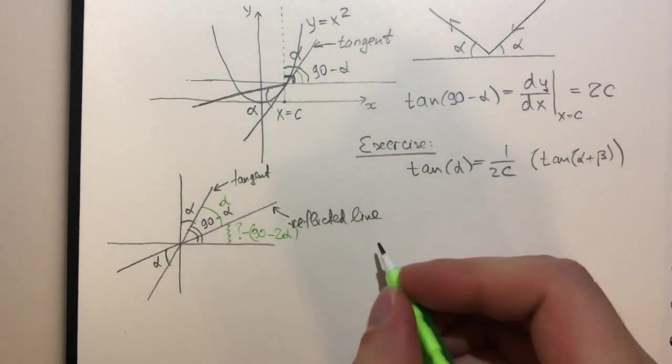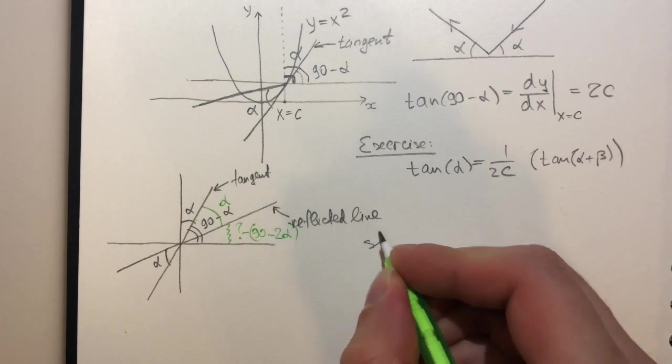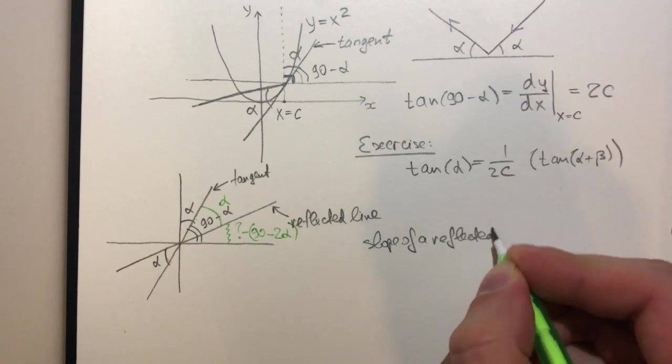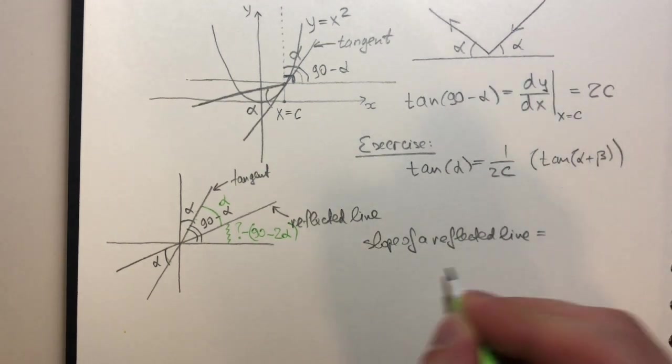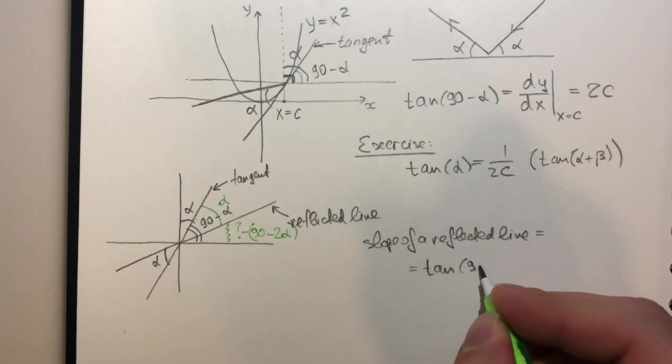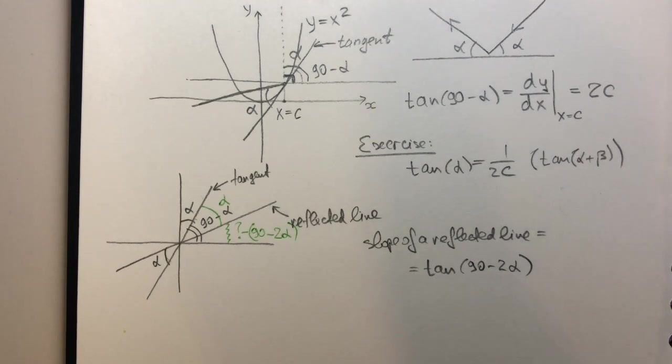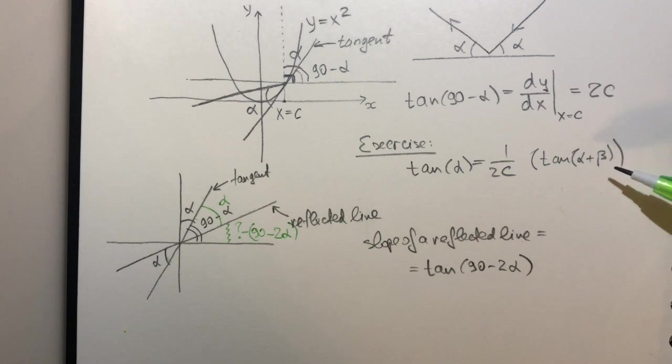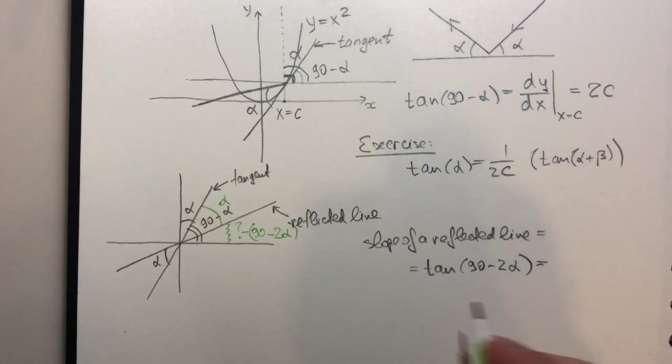So from this diagram, we know that the slope of a reflected line is equal to tangent of 90 minus 2 alpha. I will again use the double angle formula. And this identity derived in the beginning to show that the slope is actually equal to c minus a quarter times 1 over c.